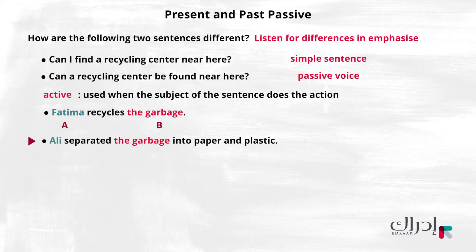Ali separated the garbage into paper and plastic. The passive voice is used when we focus on the object of the sentence. In the next examples, B becomes the subject.